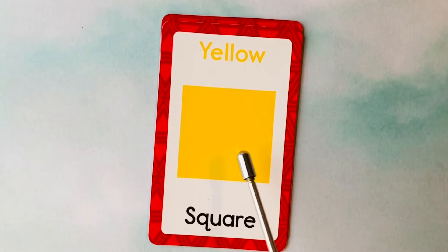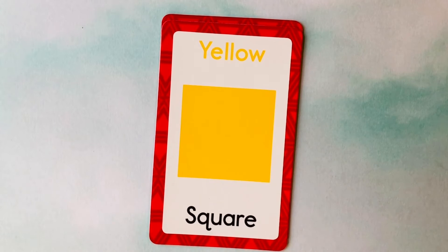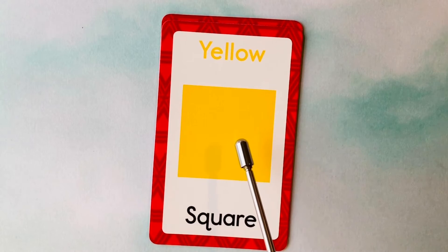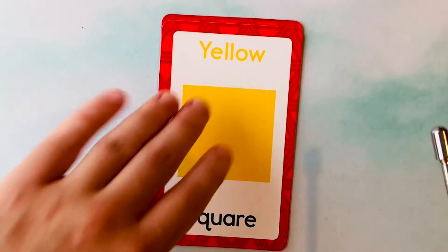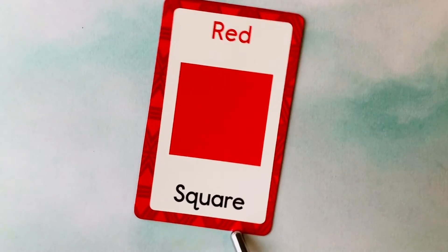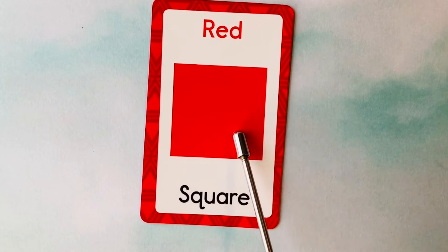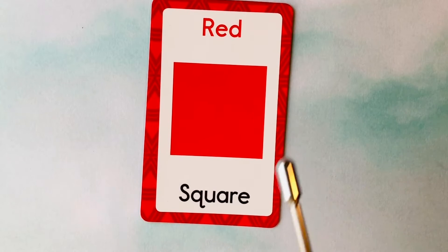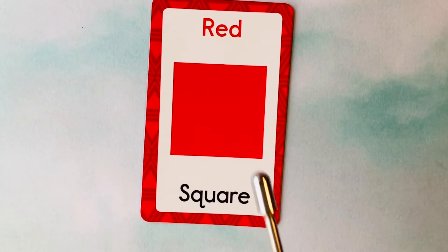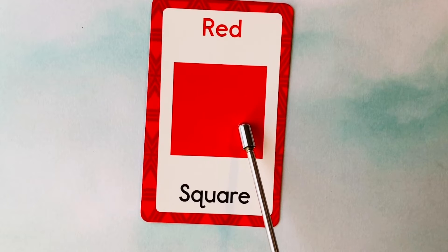This is a square. What color is this square? It's a yellow square. This is a yellow square. This is also a square. What color is this square? It's a red square. This is a red square.